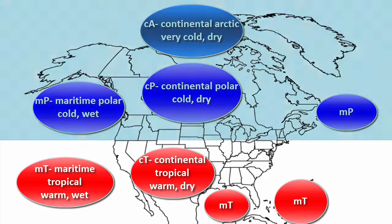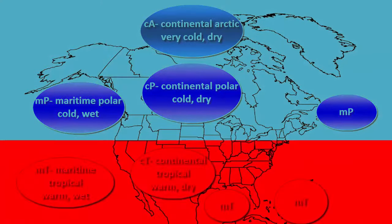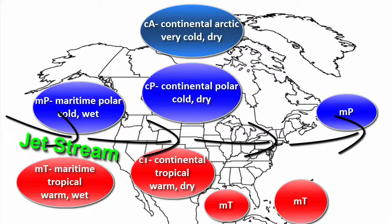Notice the pattern: all the colder air masses are up north and warmer air masses are down south. In between those, draw a set of arrows going from west to east and label that as the jet stream. Make sure your arrows are separating the cold air masses up north from the warm air masses down south.